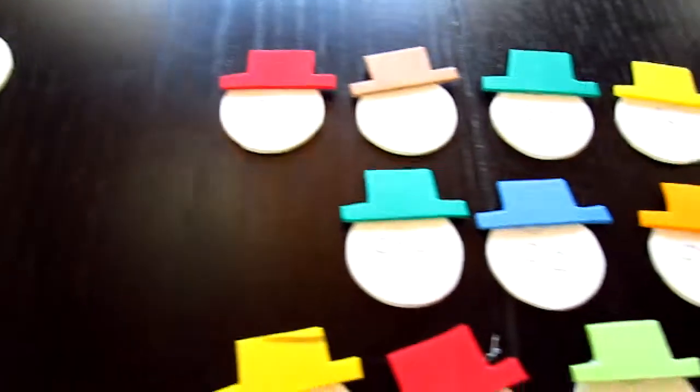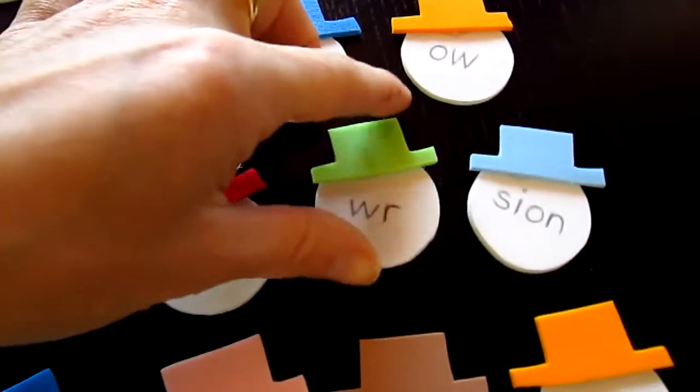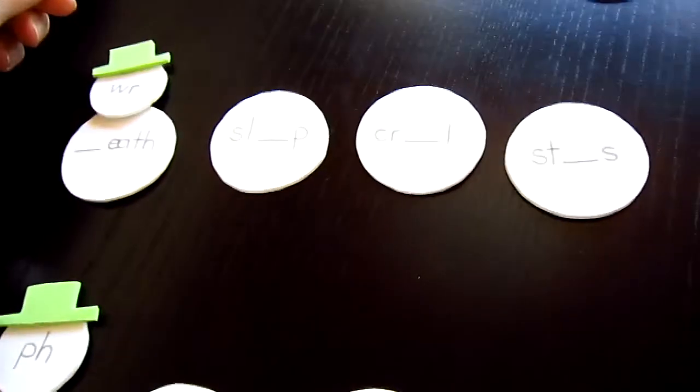Eeth. What's something that has an eeth? And we'll look for the wreath, and we'll put the little head on top of the snowman.